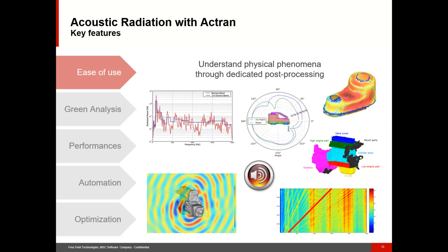But you also have access to many other post-processing indicators: maps, directivity plots, animations, waterfall diagrams. For transient phenomena you can look at Campbell diagrams or listen to the simulated sound. You can perform transfer path analysis to determine which part of your structure is radiating the most. All these post-processing indicators will help you better understand what happens, so you can come up with new design proposals to adjust the acoustic performance of your product.